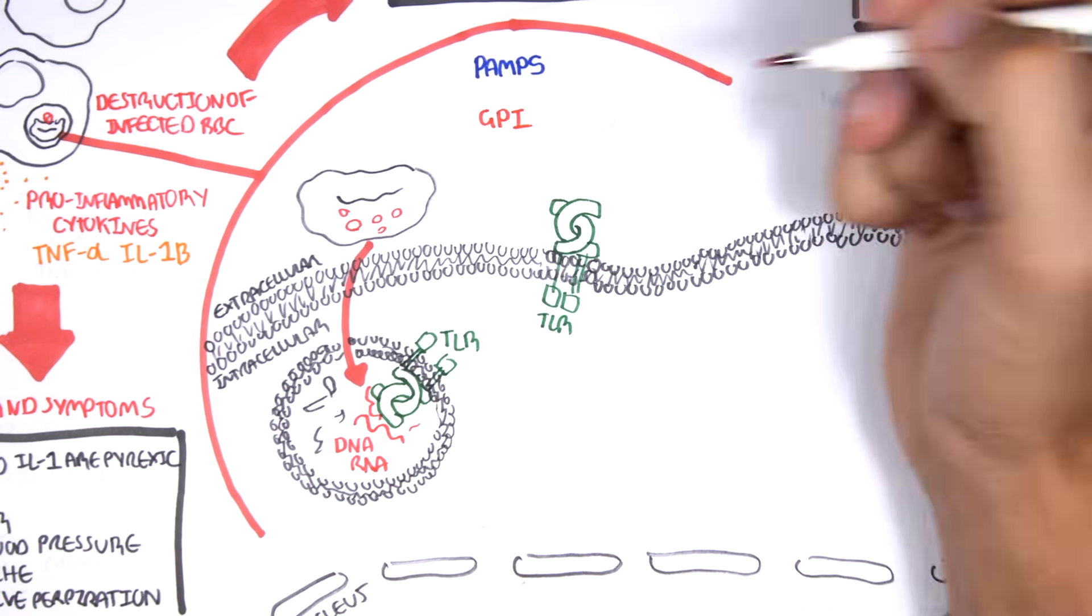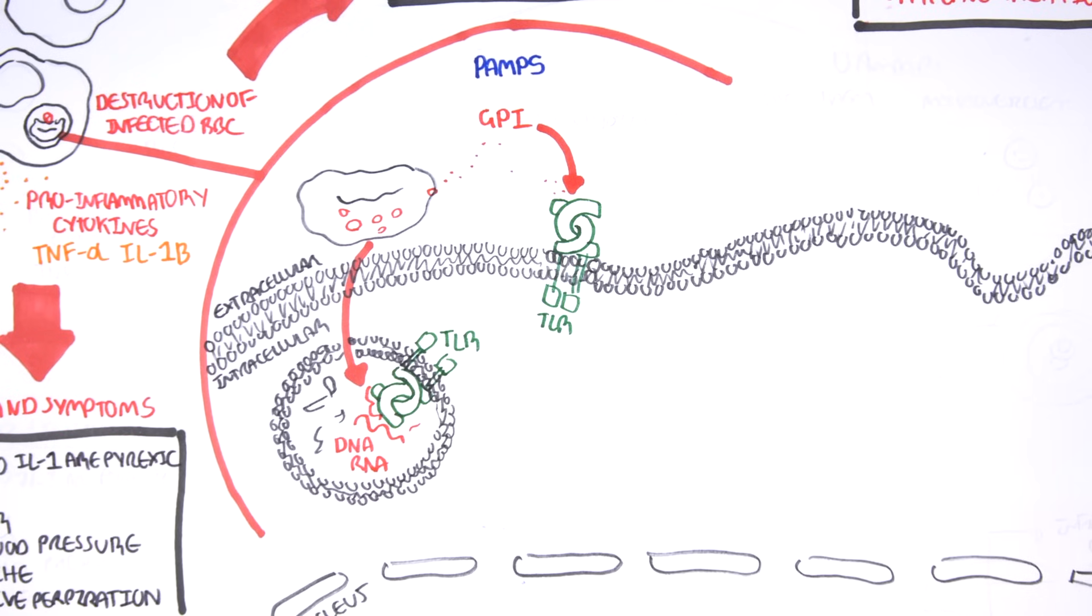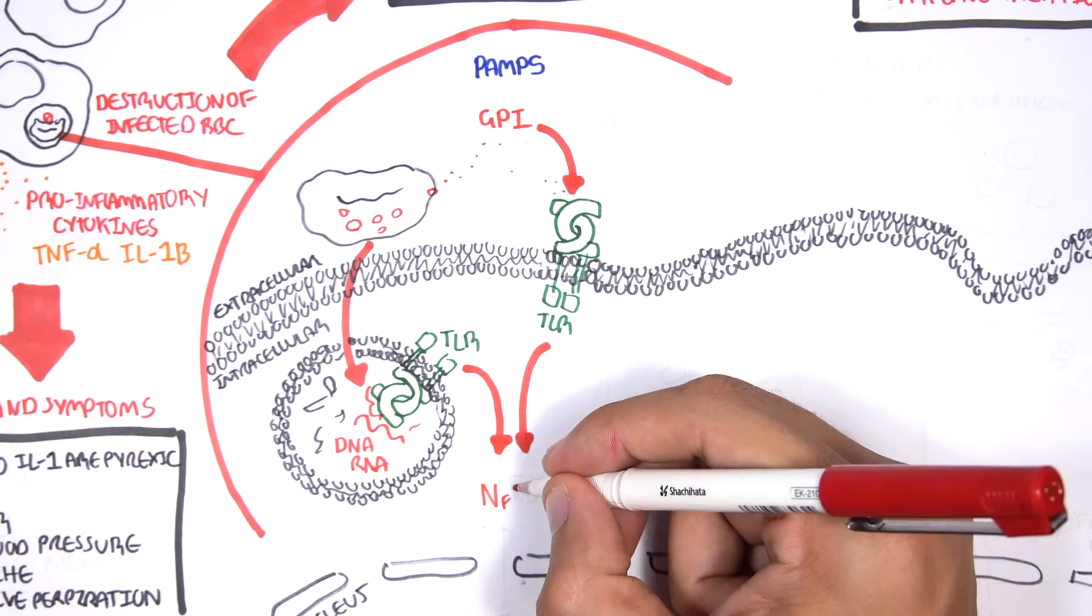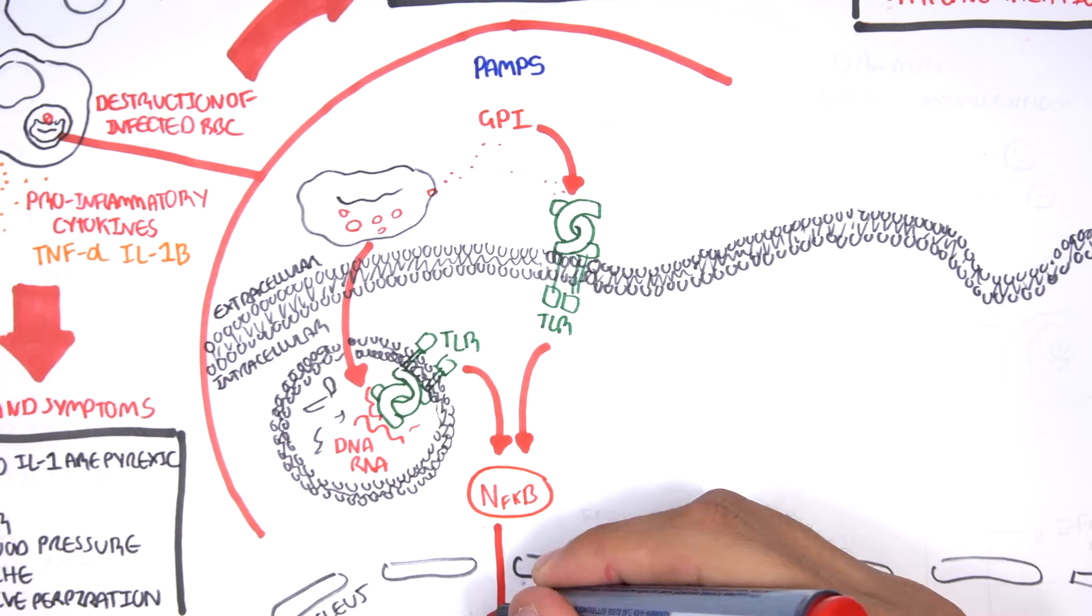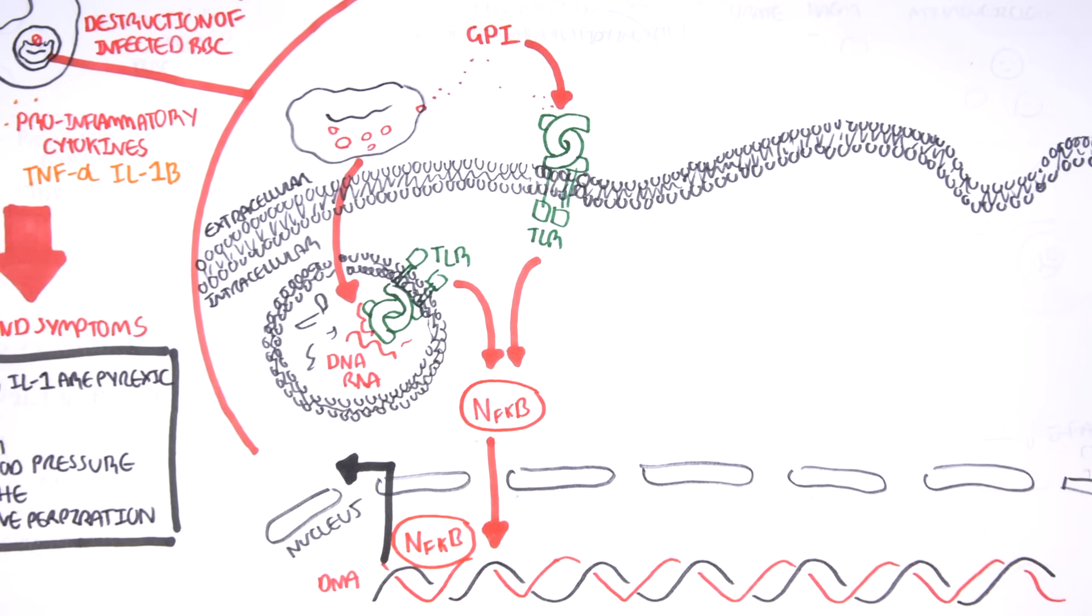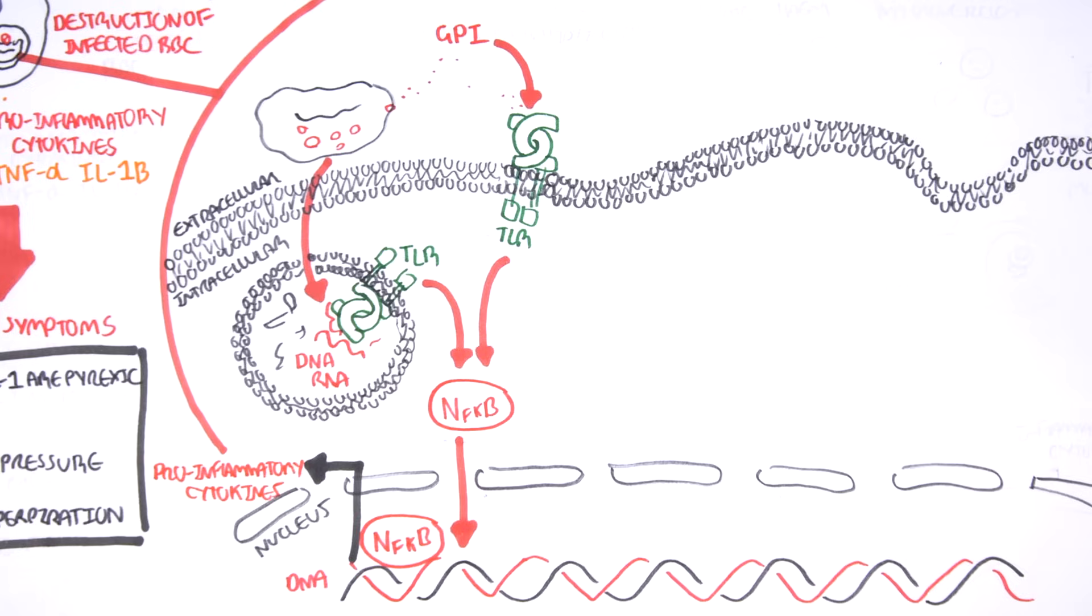GPI, which is another structure found in plasmodium parasites, can be released when the parasite infects red blood cells. GPI is properly called glycosyl phosphatidyl inositol. And are recognized also by toll-like receptors on the plasma membranes of immune cells. When the toll-like receptor recognizes GPI, it triggers an intracellular cascade leading to the activation of transcription factor, nuclear factor kappa B, NF-kB. NF-kB moves to the nucleus where it activates the transcription of pro-inflammatory cytokines that are the pro-TNF-alpha and pro-interleukin-1b. Pro-inflammatory cytokines means that they are not active, essentially. So they need to be activated, and we will actually see how this happens.